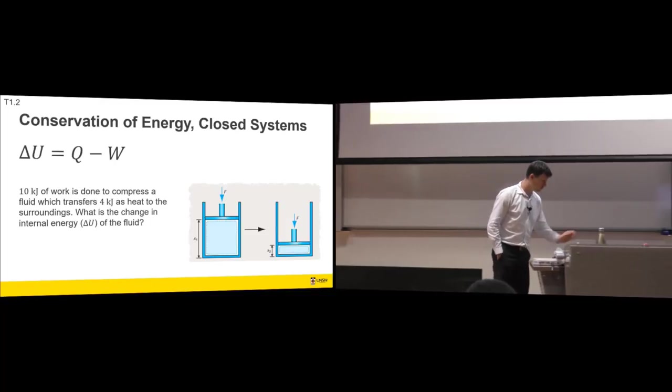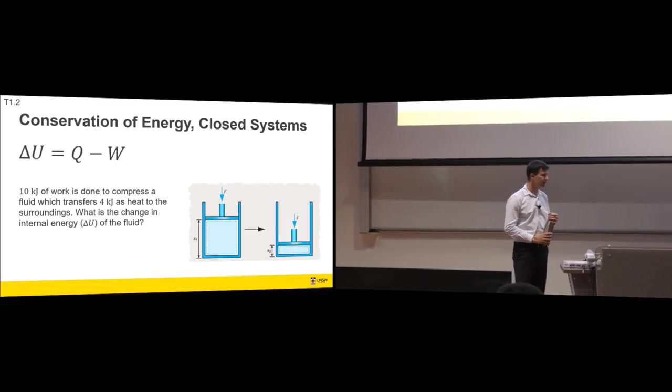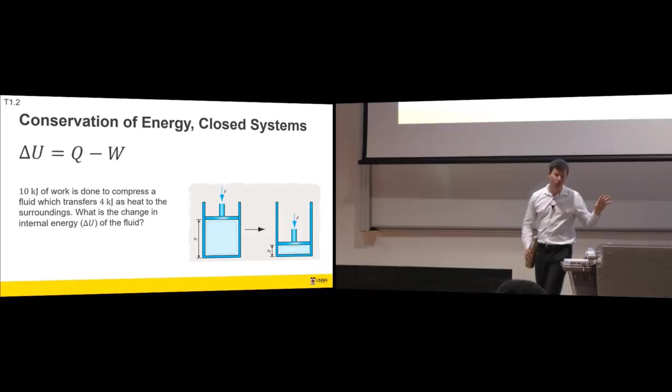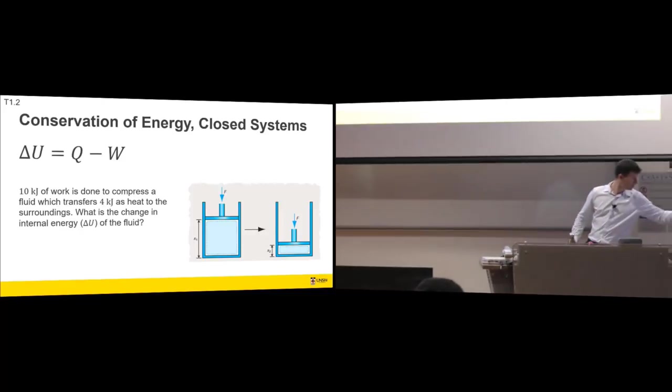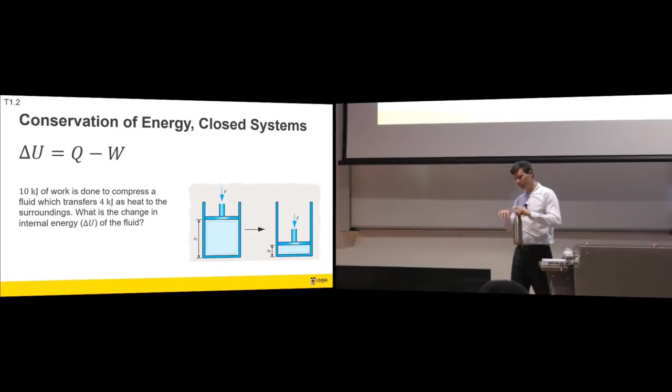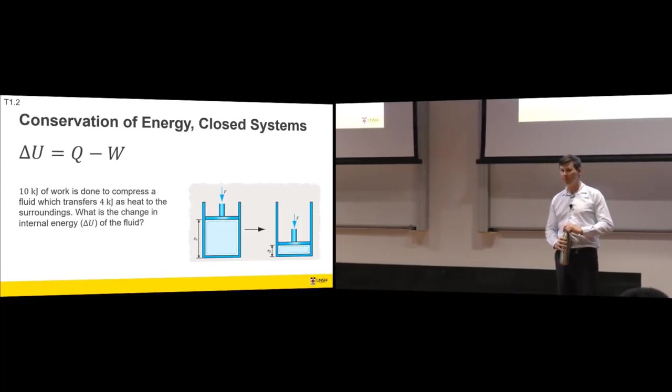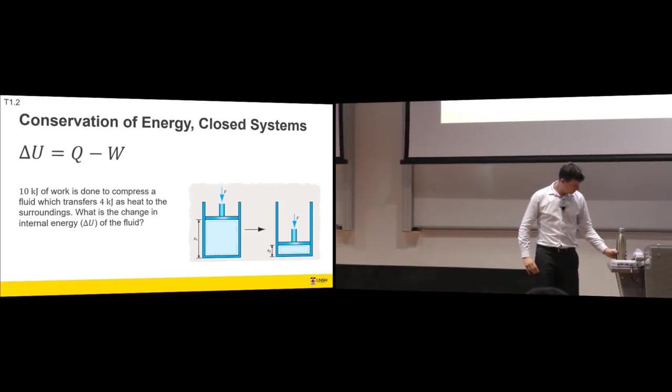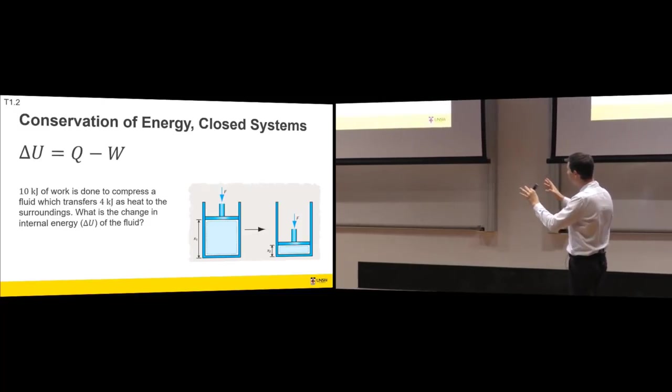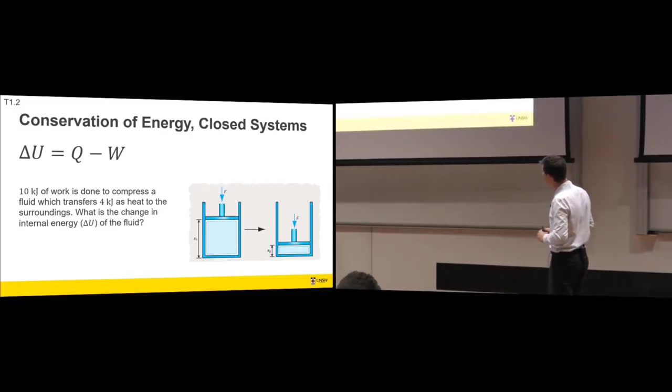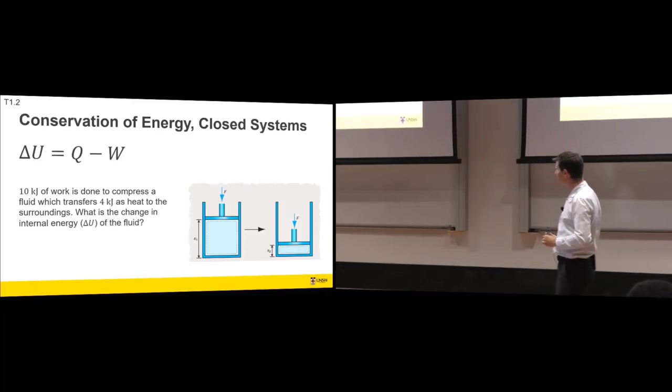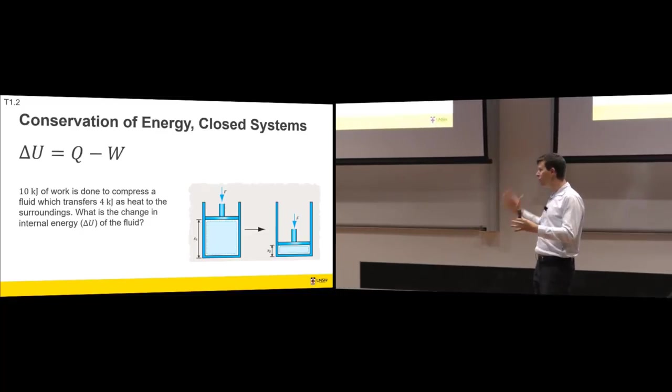So this should be trivially easy. On a total system basis, 10 kilojoules of work is done to compress a fluid which then transfers 4 kilojoules as heat to the surroundings. What is the change in internal energy, delta U, of the fluid? What's the sign of the 10 kilojoules? Is it work, is it positive or negative?